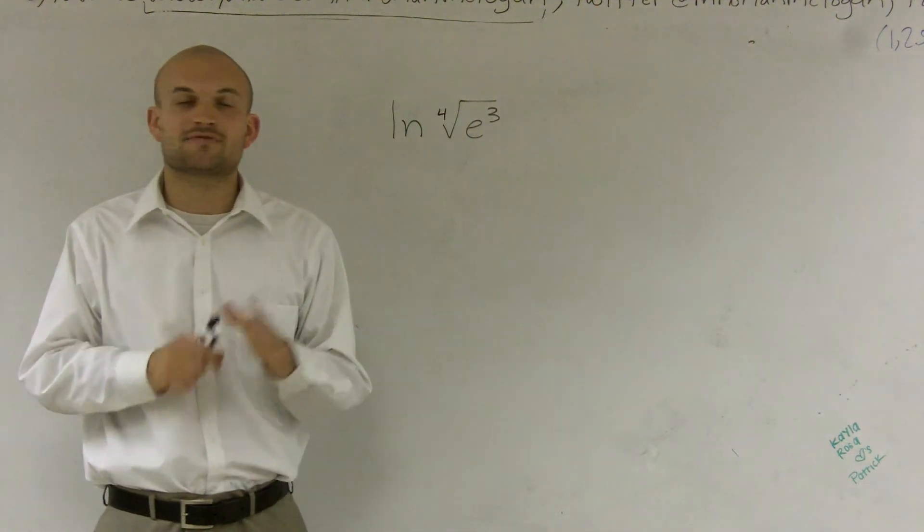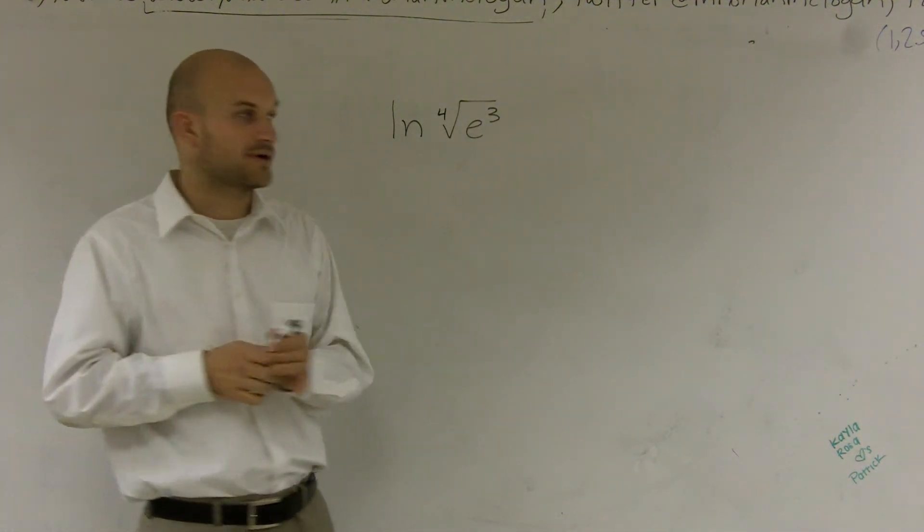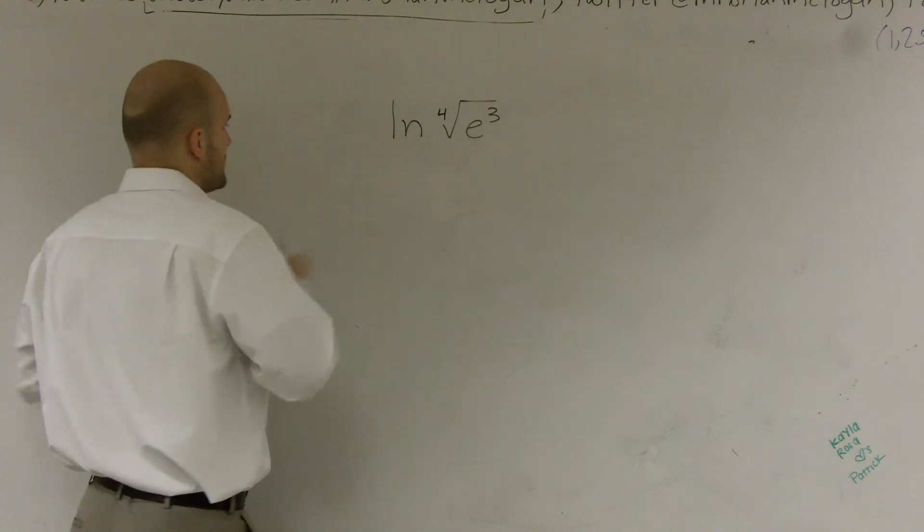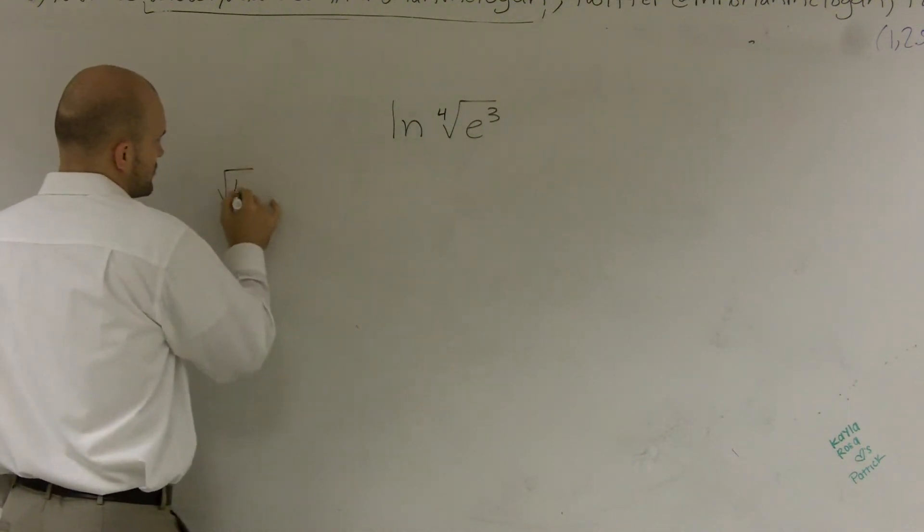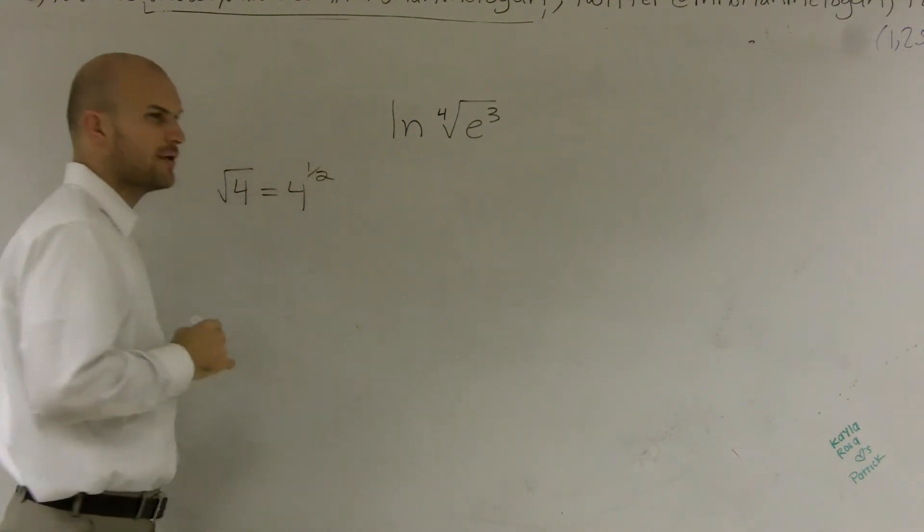However, what we can do is transfer all radicals to powers or to exponents. The way to do that—remember—is the square root of 4, which we know is 2, is the same thing as 4 to the 1/2 power. How do I know that?